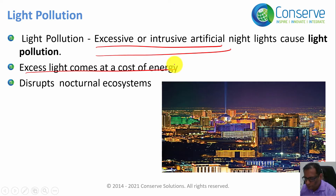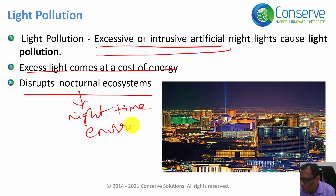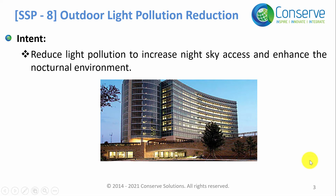Second, and very importantly, excess night light disrupts the nocturnal ecosystem — meaning the nighttime environment. When the nocturnal ecosystem is disturbed, it affects the entire habitat on the planet. On humans, light pollution causes sleep deprivation and impacts health. The intent of this credit is to reduce light pollution so as to increase night sky access and enhance the nocturnal environment.